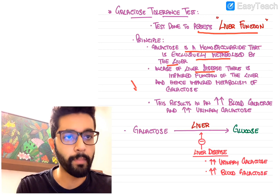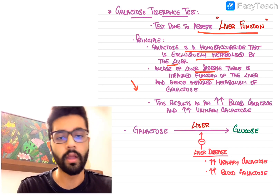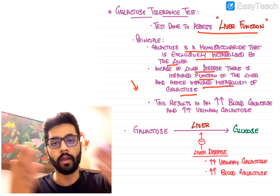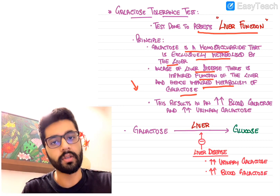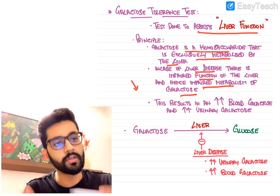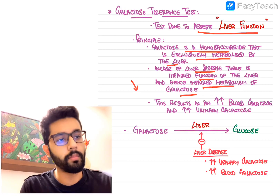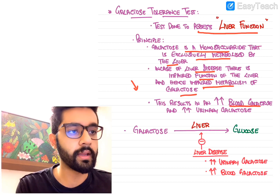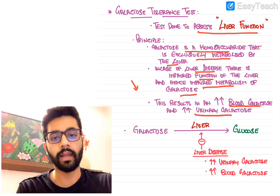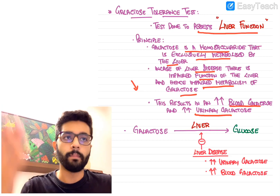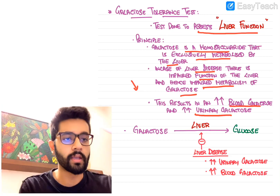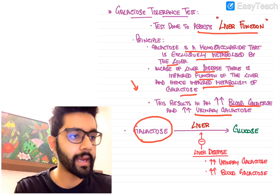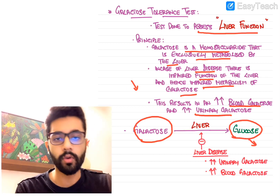Galactose is a monosaccharide that is exclusively metabolized by the liver. In case of liver disease, there is impaired or reduced liver function, which means there will be impaired metabolism of galactose. When liver functioning reduces, metabolization of galactose also reduces, resulting in increased blood galactose and increased urinary galactose.